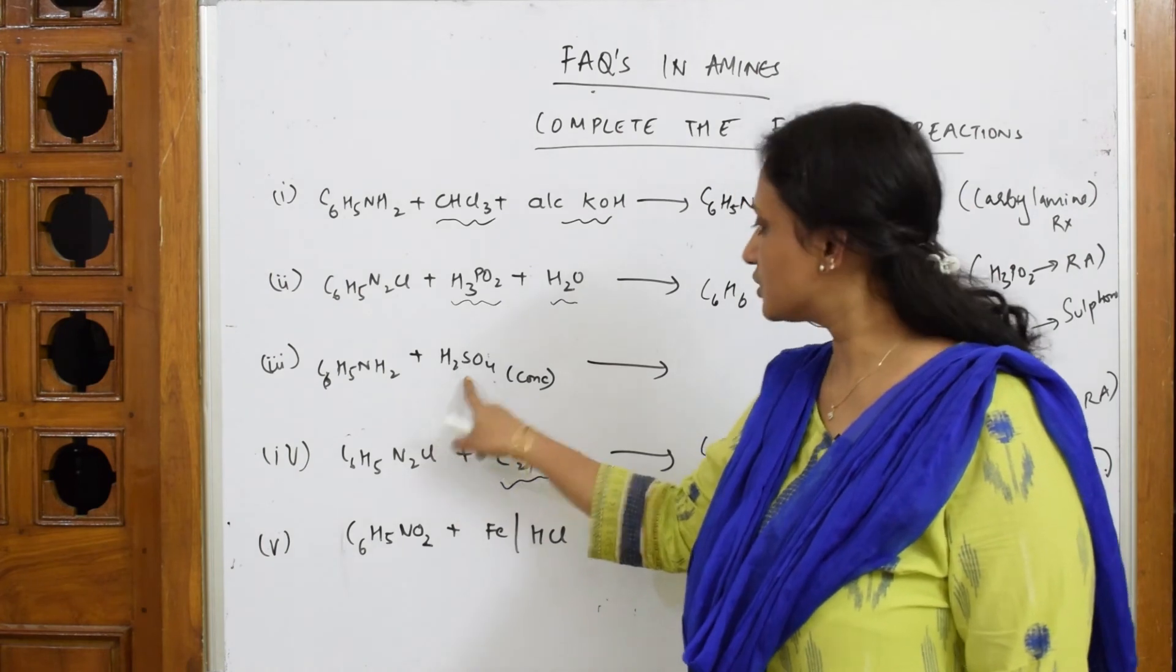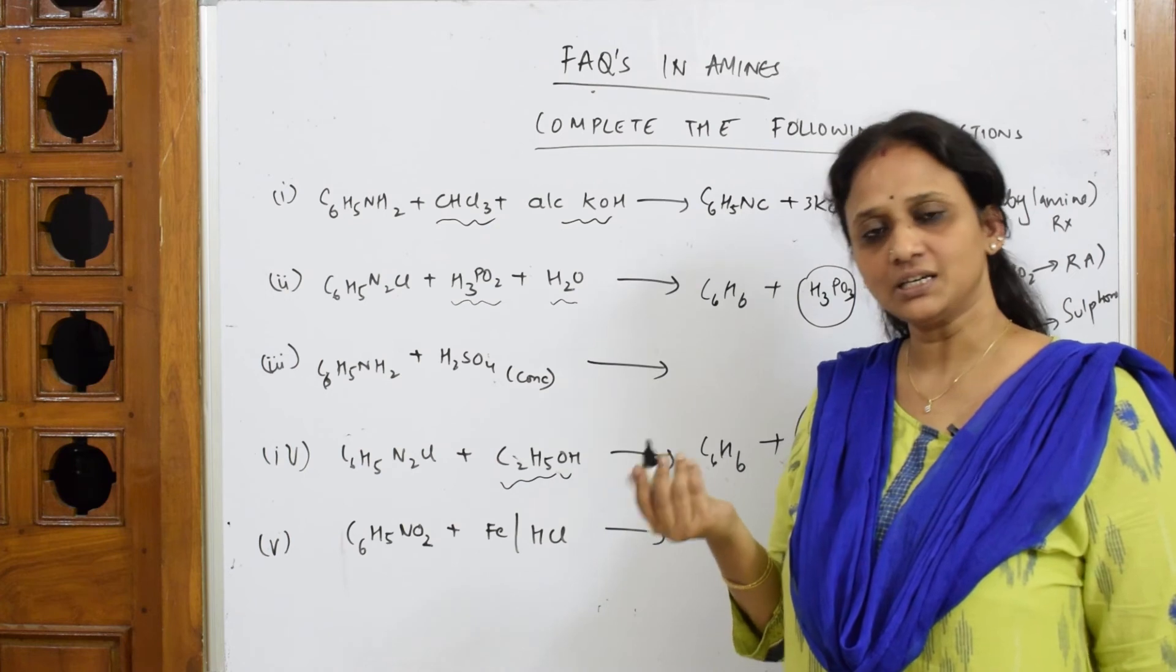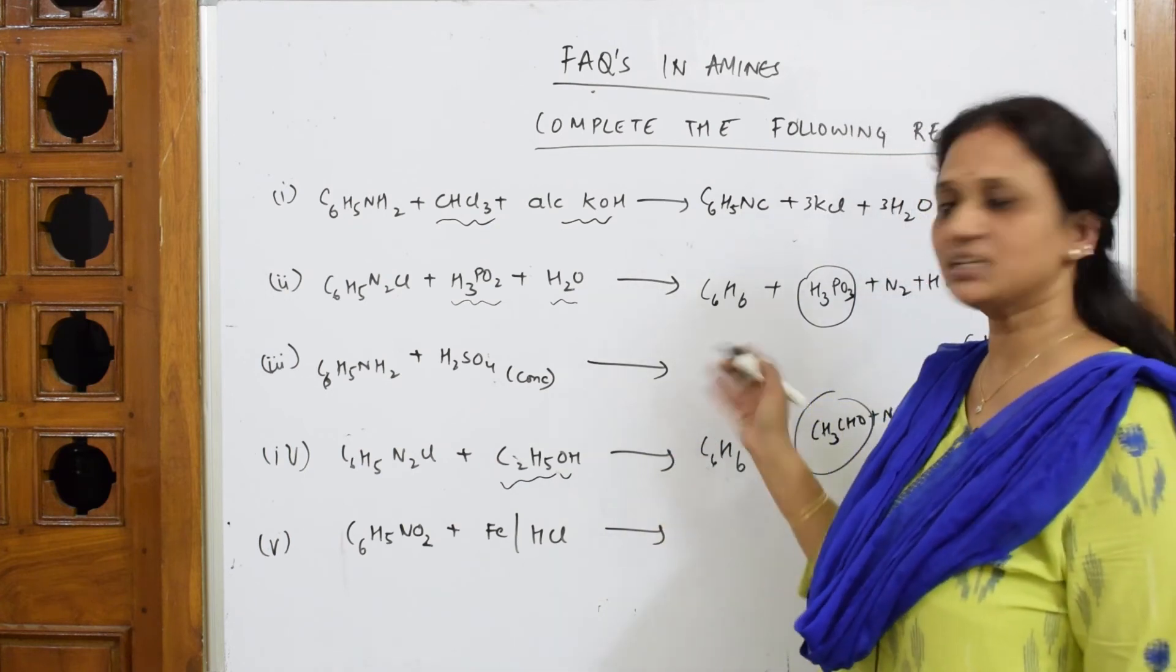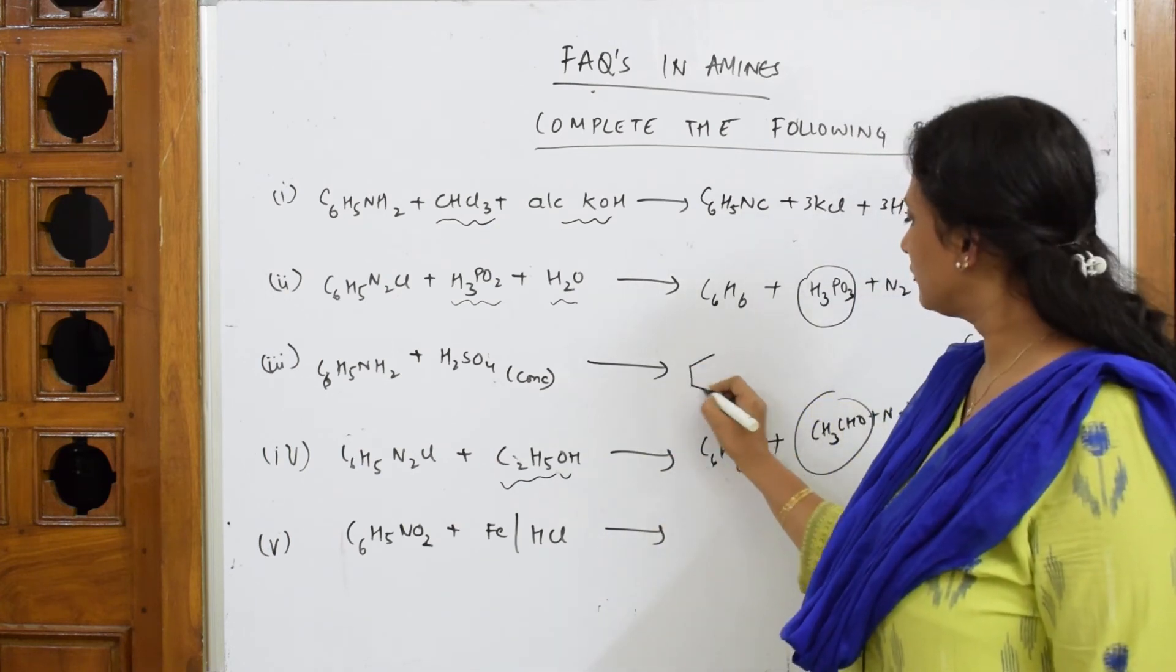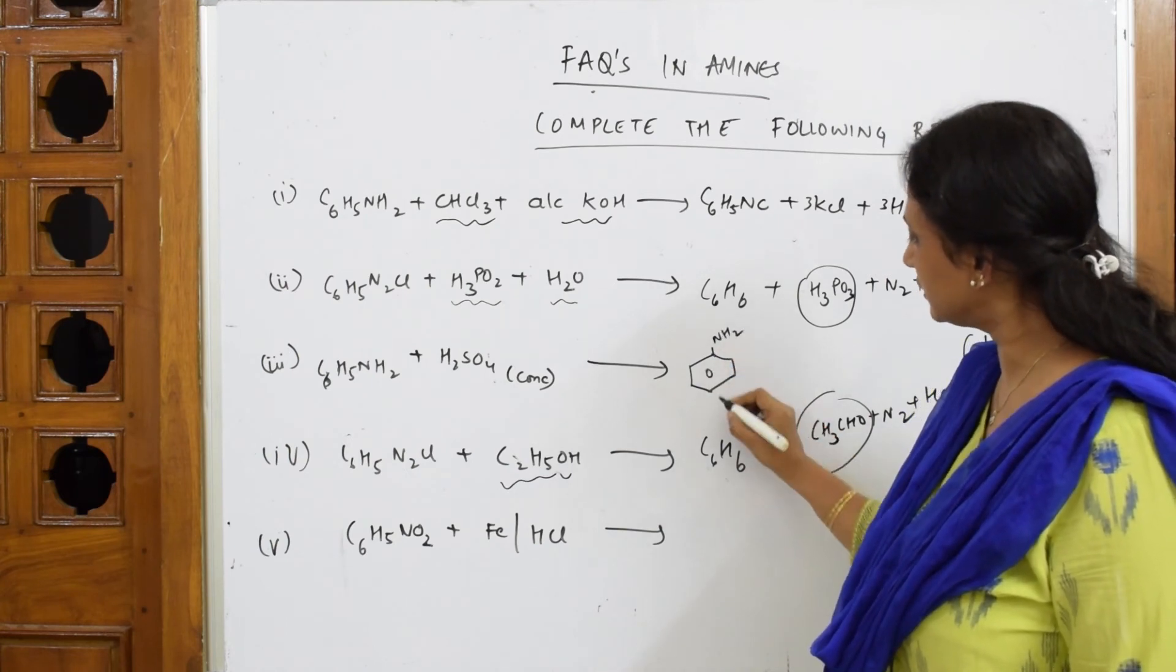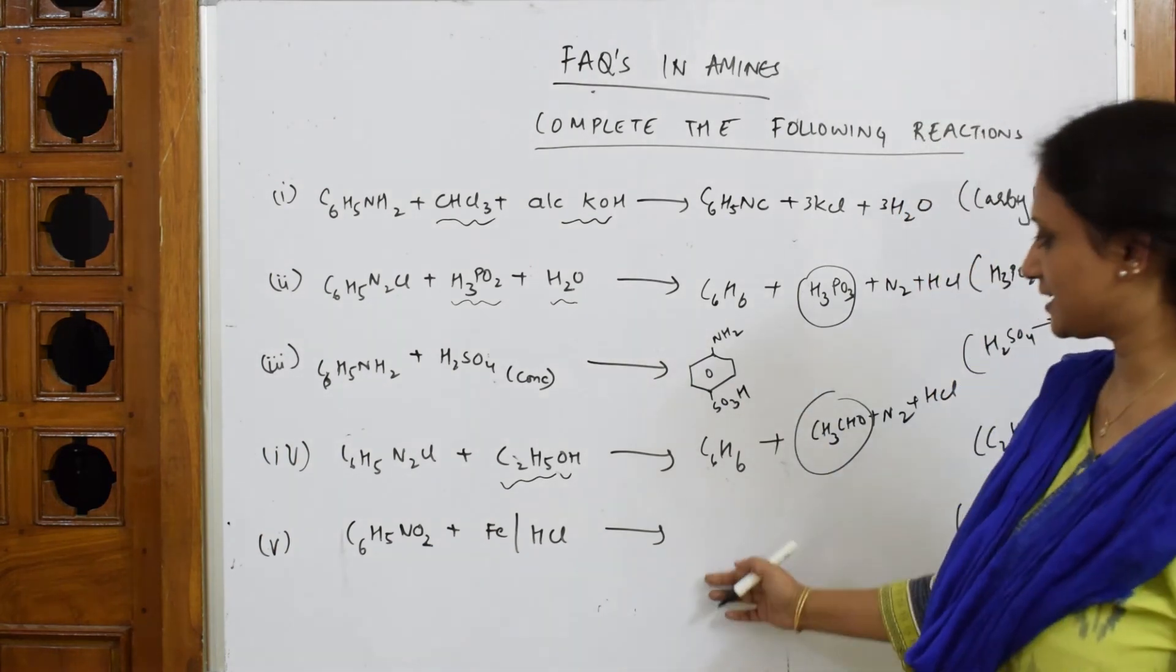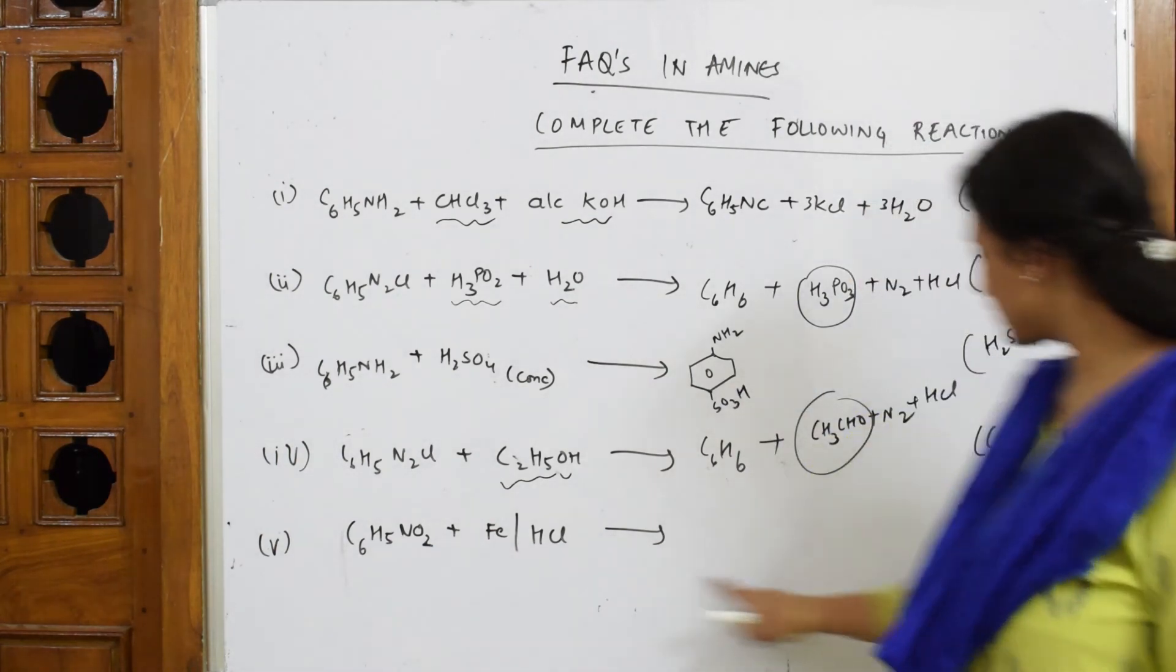Now this is your sulfonation. So what do you do in sulfonation? You will get two products, ortho product and para product. Which is the major product? So try to write the major product. Simple, you have your aniline, don't show the whole mechanism which I've shown earlier. SO3H, that's it, major.